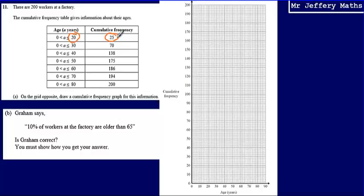So what this means is there are 25 people aged between 0 and 20. Then this next row means that there are 70 people aged between 0 and 30. So what we do is we take the end point of each class interval, match it up with the cumulative frequency.